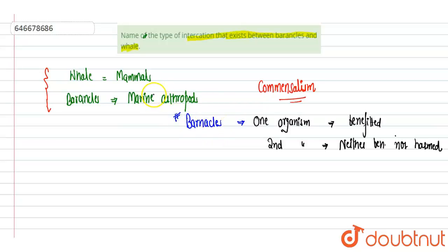In this way, the whale doesn't have any harm because it's eating its own food, but barnacles are being benefited. So this type of association is known as commensalism.